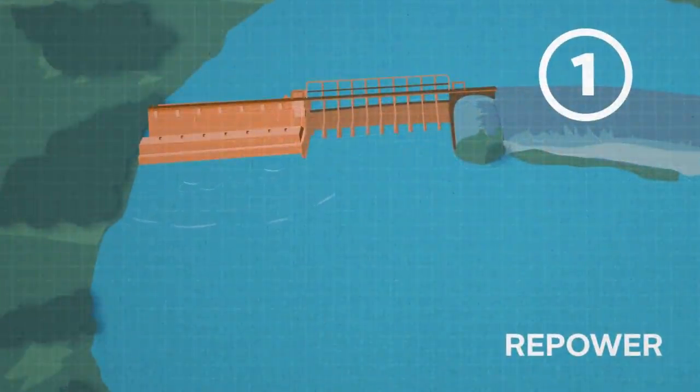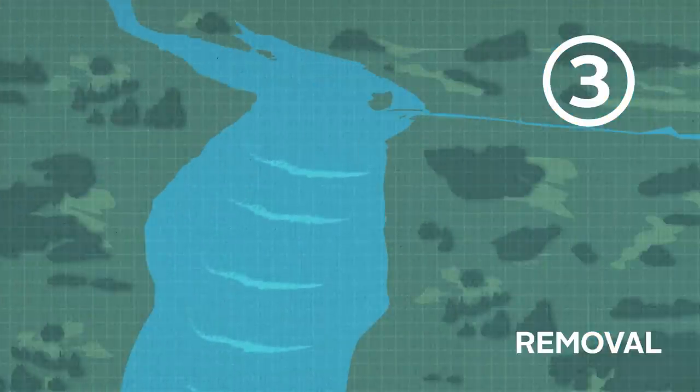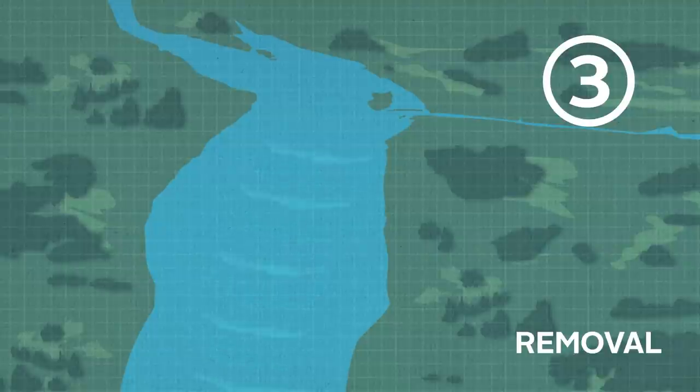We could build a new generating station, stop making power but leave the dam in place, or remove everything and allow the river to return to its natural flow.